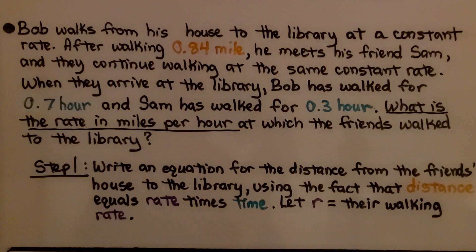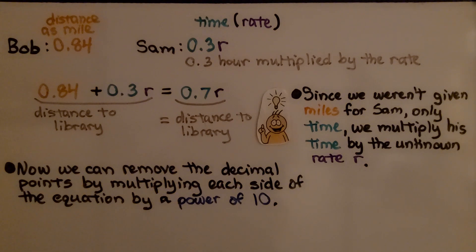What is the rate in miles per hour at which the friends walked to the library? So our first step is we need to write an equation for the distance from the friend's house to the library. Using the fact that distance equals rate times time, we're going to let r equal their walking rate. Knowing how to set up and write our equation is probably going to be the most difficult part, so pay attention here.